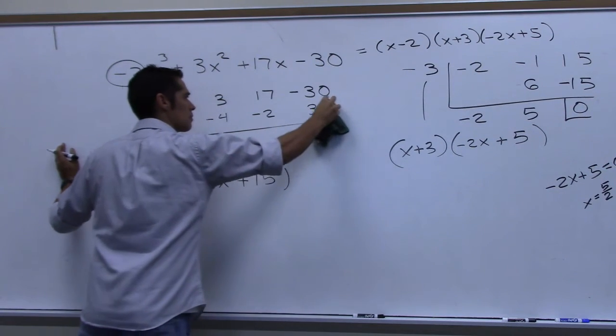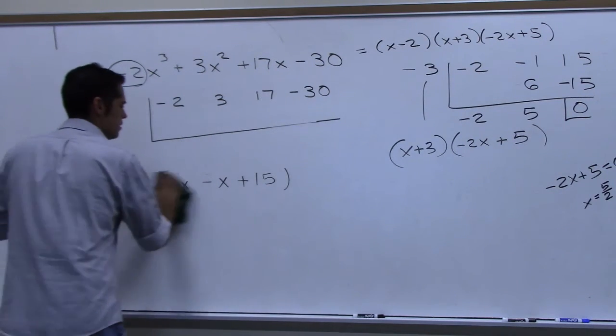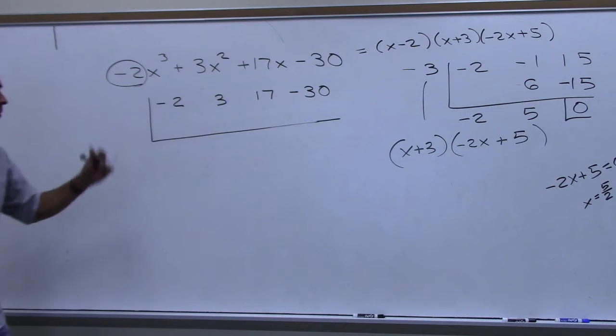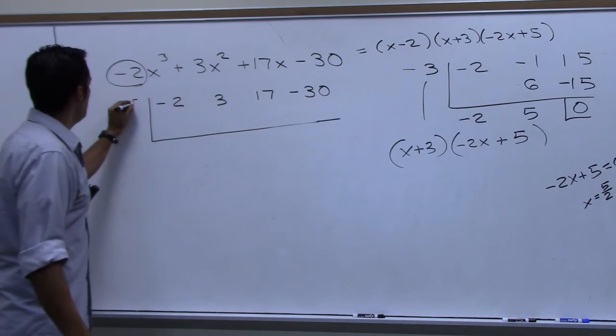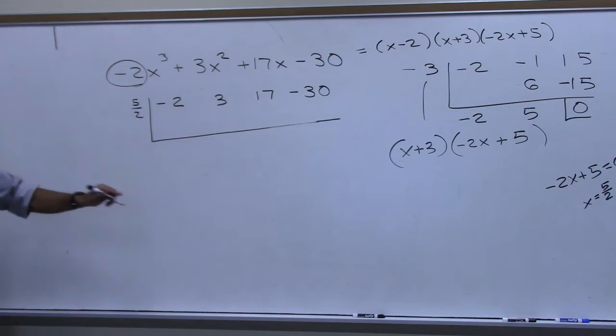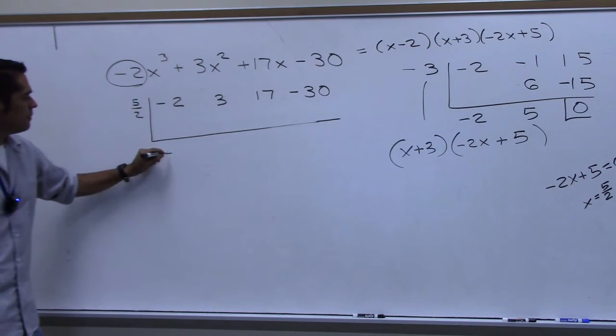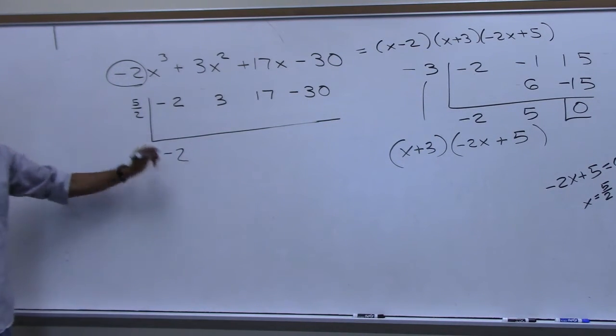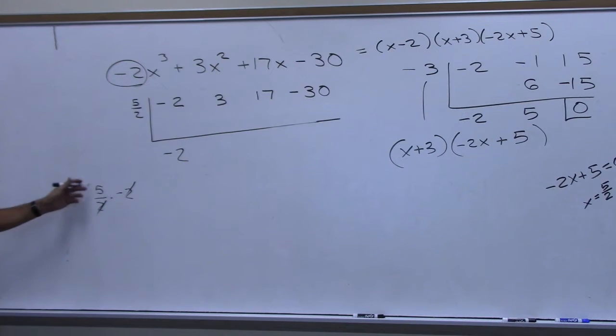The very beginning right here, this is just for demonstration purposes. Five halves should work out and I should get a remainder of zero. So negative two comes down, I multiply this times this. Five halves times negative two, the twos cancel, I get five times negative one, that's negative five.